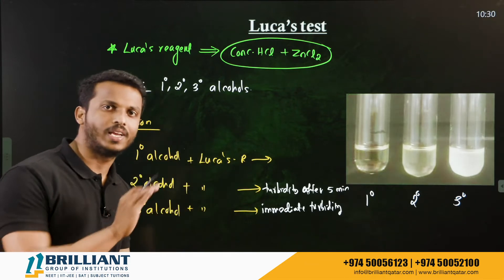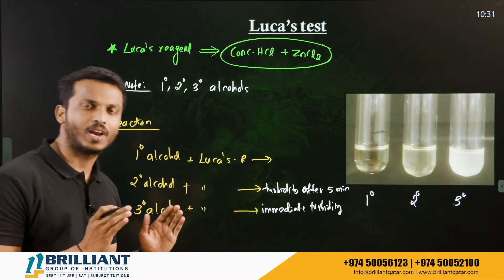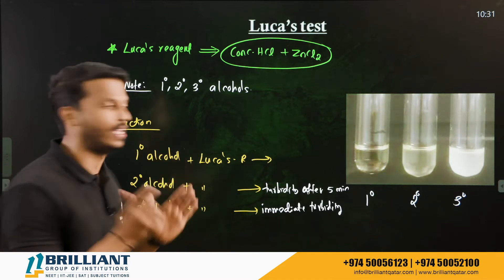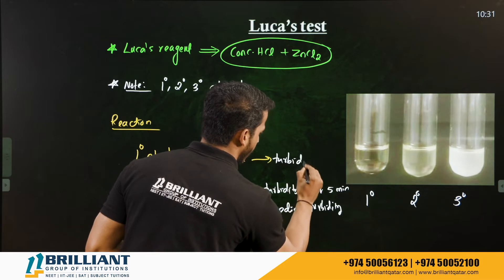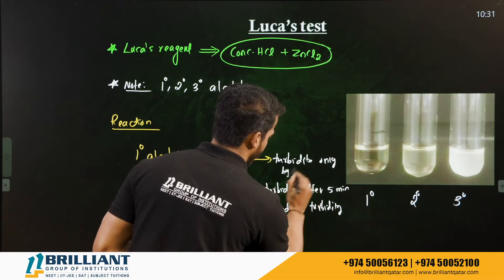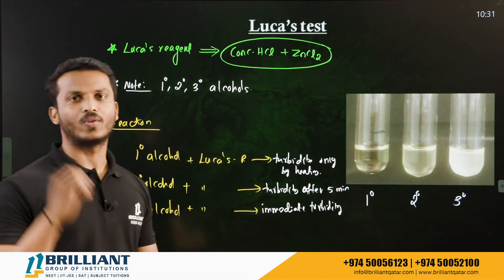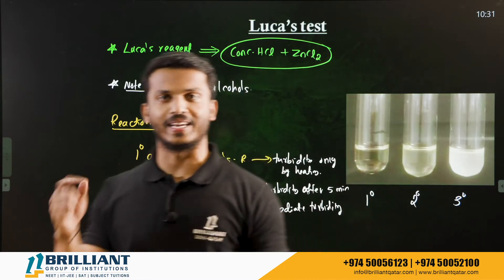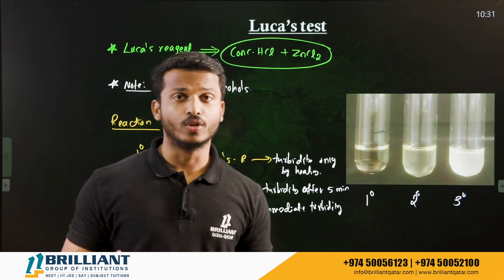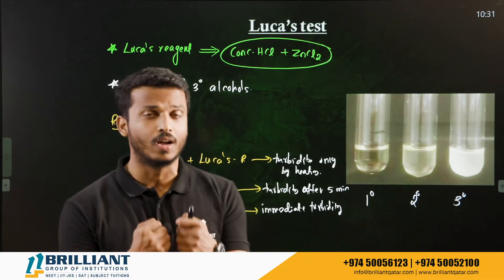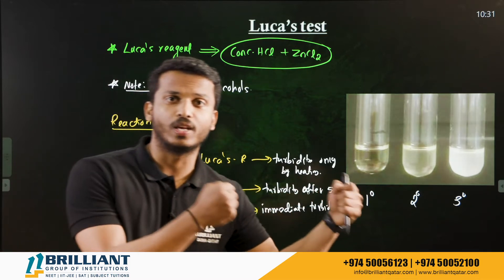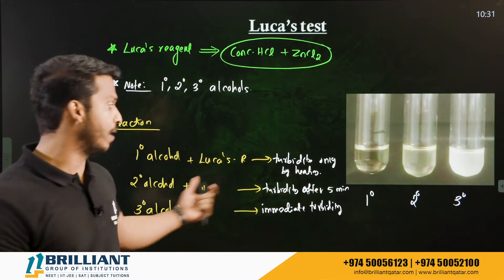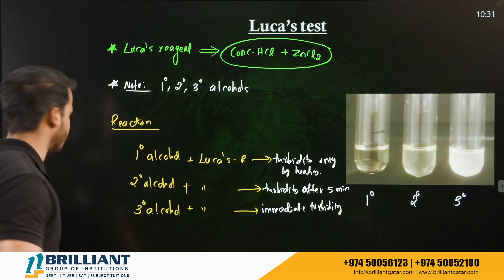Primary alcohol under normal conditions shows no reaction — it stays as it is. Primary alcohol generally won't react with Lucas reagent immediately; it can give turbidity only by heating. So: tertiary gives immediate turbidity, secondary gives turbidity after five minutes, and primary gives turbidity only on heating.